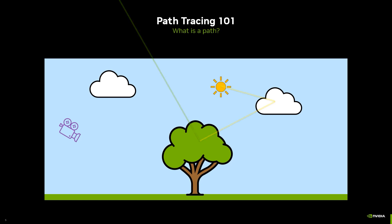Path tracers take advantage of the fact that paths are reversible. Instead of tracing paths starting at the light source, we trace paths starting at the camera. This way, both paths contribute something to the image, but not all paths are equal. It's also worth noting that ray tracing is different from path tracing: ray tracing simply traces a single ray into the scene, while path tracing uses ray tracing to trace various path segments to solve the rendering equation.